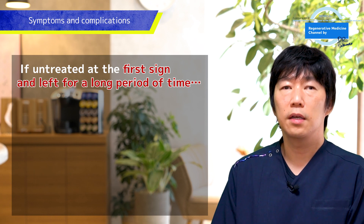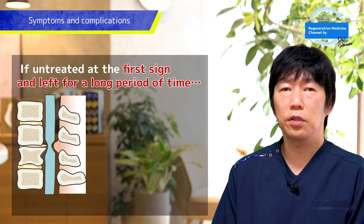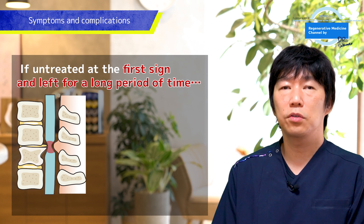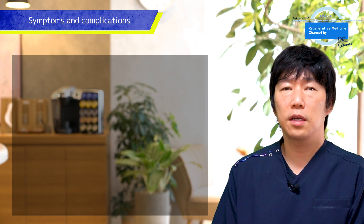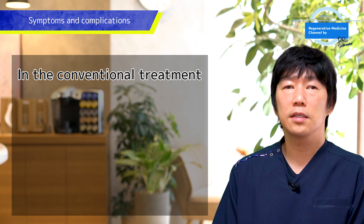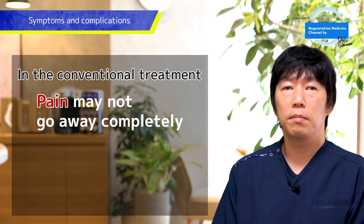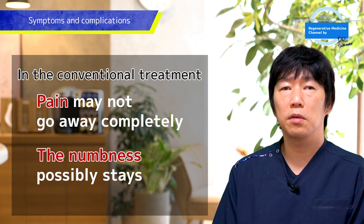Because the spinal cord is physically compressed by discs, ligaments, and bone spurs for a long time, damaged nerves — even after relieving pressure by surgery — cannot recover and repair to a normal level. This makes numbness, pain, and weakness remain. When I was working in a hospital, explaining about operations for cervical disc herniation and lumbar disc herniation, I would inform patients that the pain may reduce somewhat, but surgery may not remove the pain completely and the numbness possibly stays.